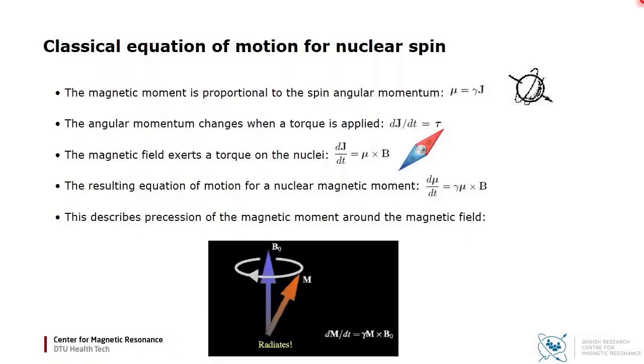We can derive the equation of motion for the nuclear spin using classical mechanics. The magnetic moment μ is proportional to the spin angular momentum J, as you would expect for a rotating charge distribution. The angular momentum changes when a torque is applied, so from Newtonian mechanics we have dJ/dt equals τ, where τ is the torque.